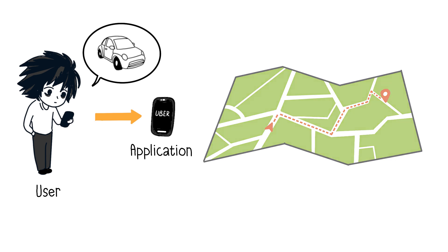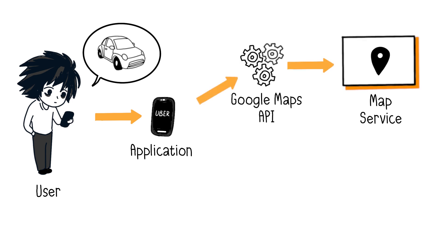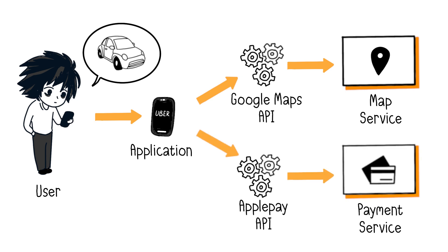In reality, Uber calls upon location and mapping services provided by Google Maps API, and after your ride is completed, you are billed for it. To achieve this, the Uber app uses the payment system provided by Apple Pay, a service by Apple.